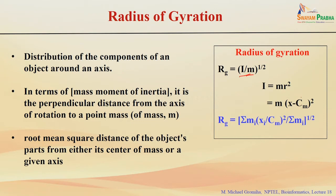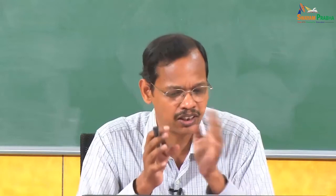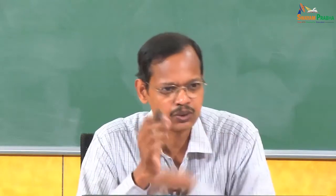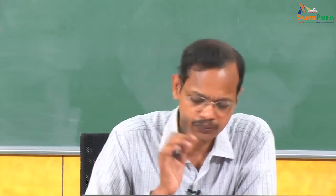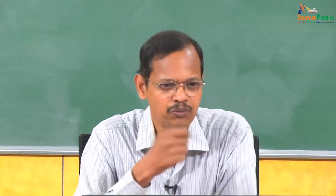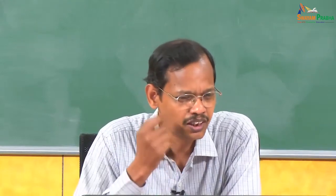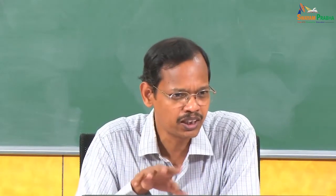Substituting these values, you get Rg equals the square root of [Σ m_i · (x_i − cm)²] divided by Σ m_i. You can calculate the radius of gyration, which provides information regarding the positions of atoms in any particular protein. When discussing molecular dynamics simulations, how the atom positions vary can be determined using this radius of gyration.